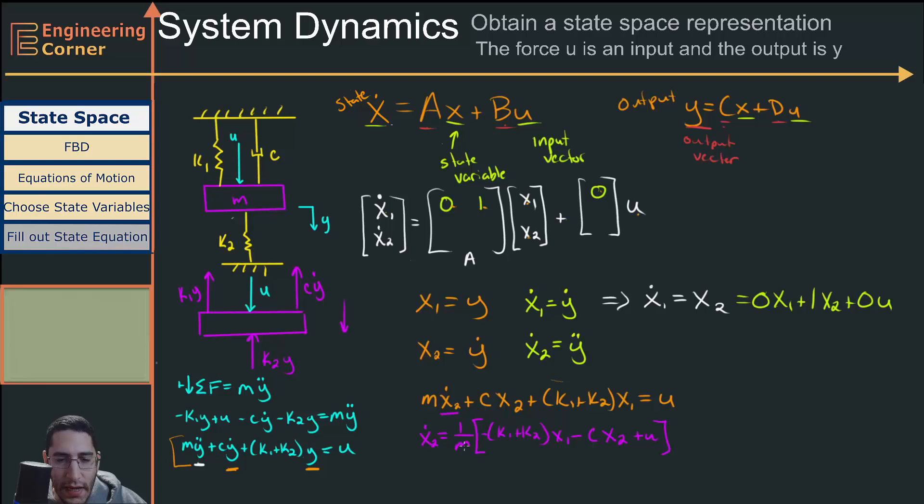And if I'm a little more careful, I can say this is minus k1 plus k2 divided by m times x1 minus c divided by m times x2 plus 1 over m times u.